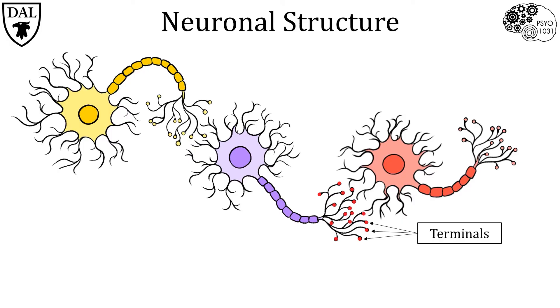It is important to note that while most axon terminals synapse on dendrites, axon terminals can also synapse onto other parts of the neuron, such as the soma and the axon.